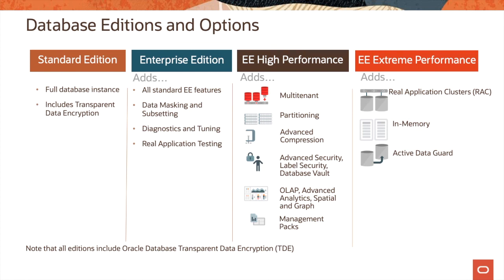As you go from left to right with Enterprise Edition, you get all the standard Enterprise Edition features, but in addition you get data masking and subsetting pack, diagnostics and tuning pack, as well as Real Application Testing. Customers on-premises need to license these additional Enterprise Manager packs separately, but on OCI this additional functionality is bundled during deployment of database Enterprise Edition.